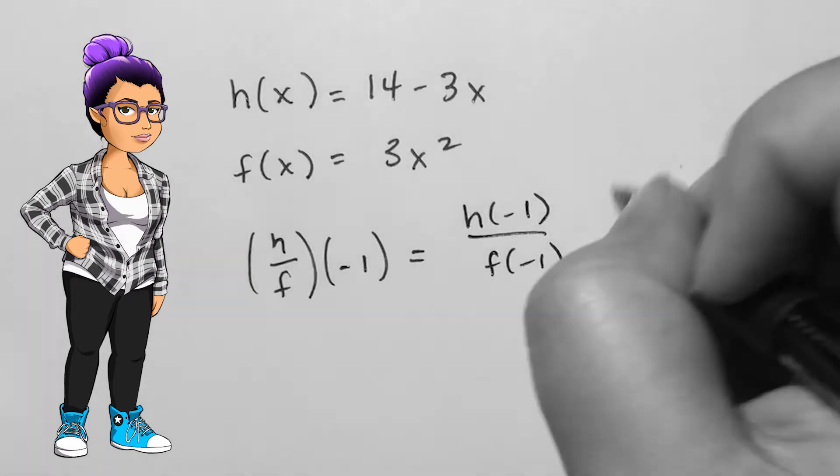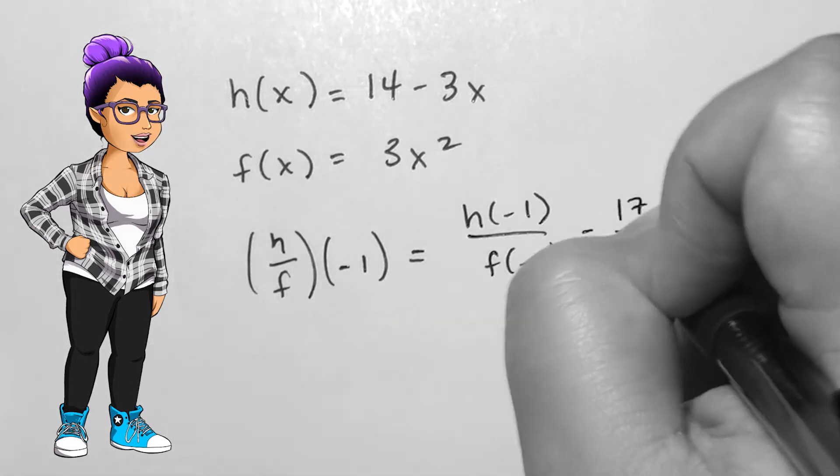h of negative 1 is 17, while f of negative 1 is 3, so my answer is 17 over 3.